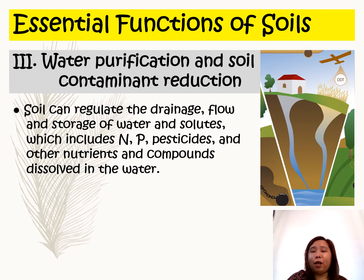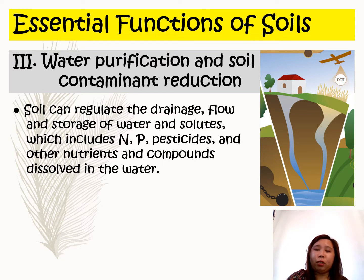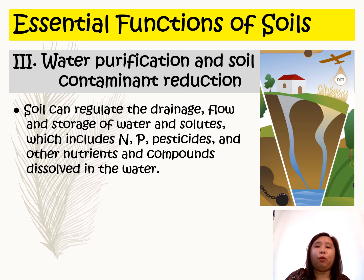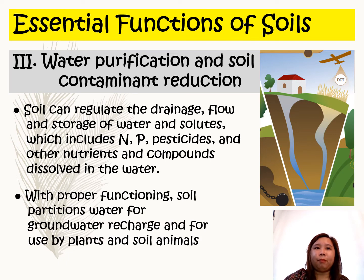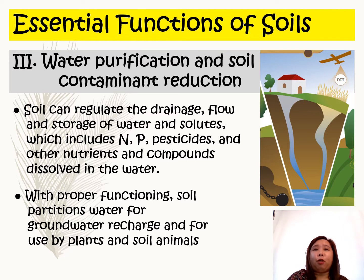Soil can regulate drainage, the flow and storage of water and solutes — this includes nitrogen, phosphorus, pesticides, and other nutrients and compounds dissolving in the water. With properly functioning soil, it partitions water for groundwater recharge and for use by plants and soil animals.